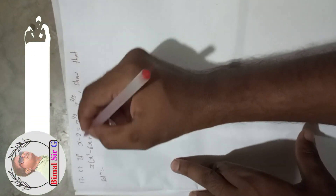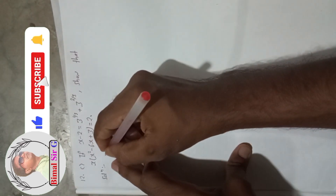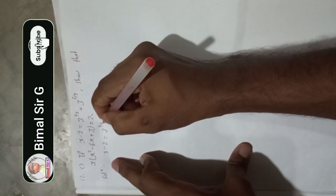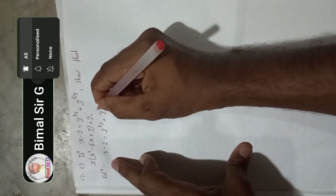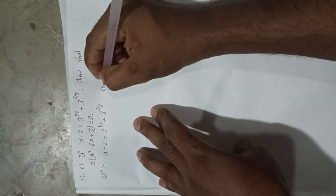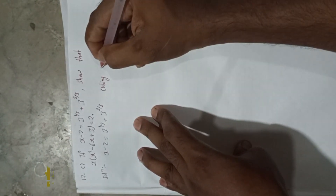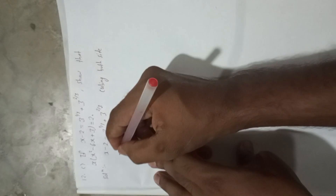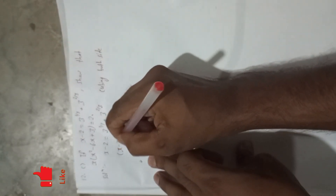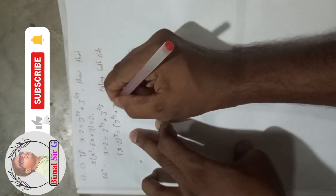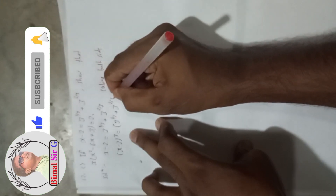So here, what is given: x minus 2 is equal to 3 to the power 1 by 3 plus 3 to the power 2 by 3. This is given. Now cubing both sides: x minus 2 whole cube is equal to 3 to the power 1 by 3 plus 3 to the power 2 by 3, whole cube.